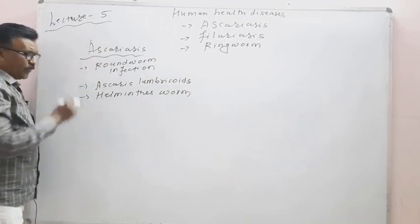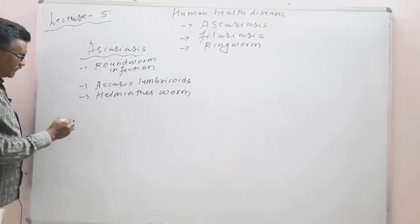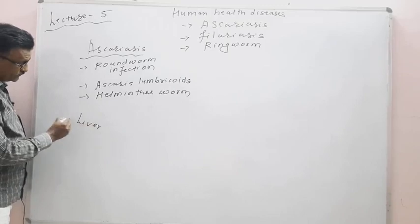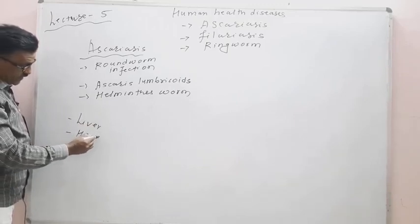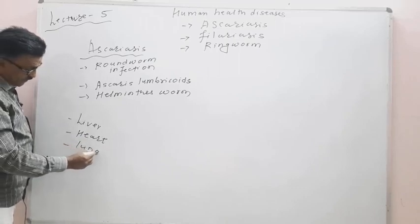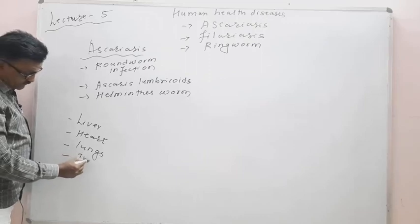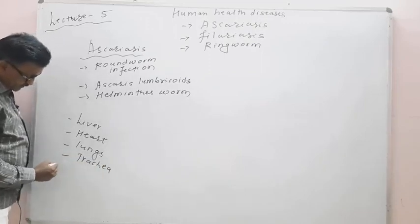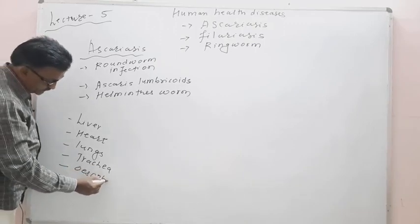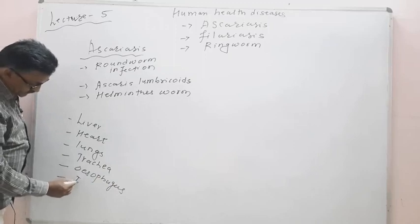The sites of infection in Ascariasis include the liver, heart, lungs, trachea, esophagus, and intestine.